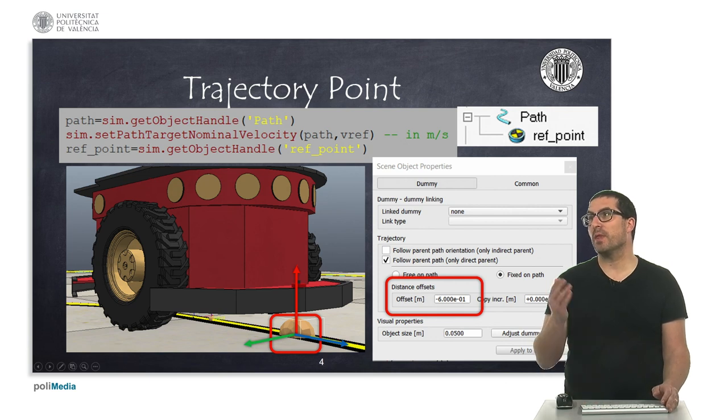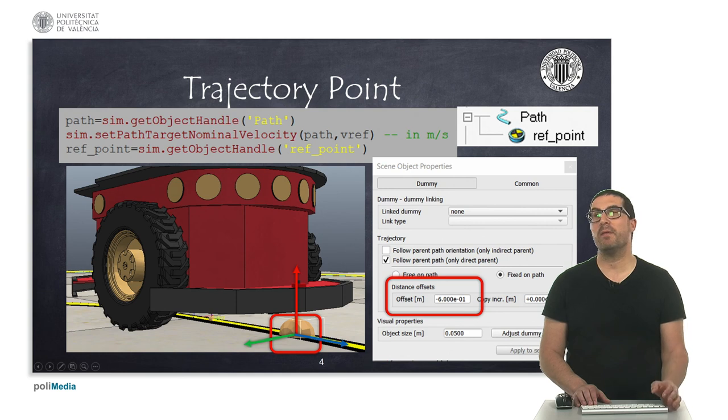Also, yes, you can implement the code I'm suggesting here to get the handle of the path to set a specific velocity, a nominal velocity, to that path. That will be the speed of the point moving on the trajectory. And also to get the handle of this dummy that we will need for later use.